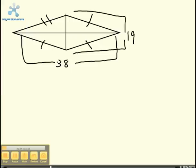To find the area, you first plug in the given lengths of the diagonals into the formula. The whole length of one diagonal is 38 and the other diagonal is 19.